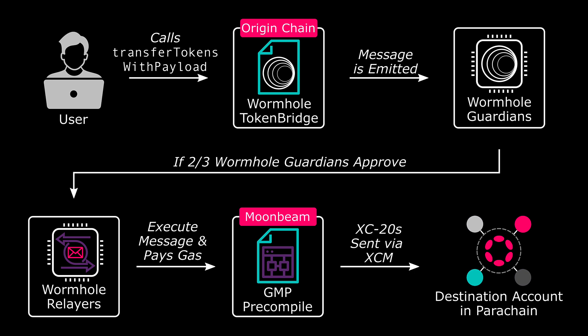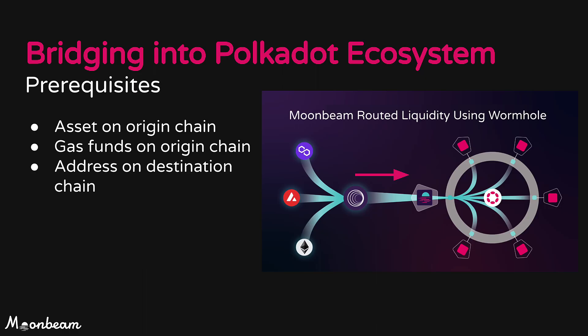In this video, we'll be demonstrating moving assets from Phantom to the HydraDX parachain with the Carrier dApp using MRL. Bridging into a Polkadot parachain using MRL is easy. Let's talk about prerequisites for a brief moment. You need to have the asset on the origin chain — in this case, we'll be bridging USDC from Phantom. You also need to have gas funds on the origin chain; we'll need some FTM in our wallet to pay for gas fees. And of course, we also need to have an address on the destination chain. I have an account set up within the Polkadot.js extension that I'll use as my destination account.